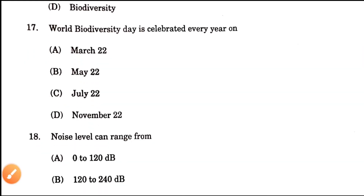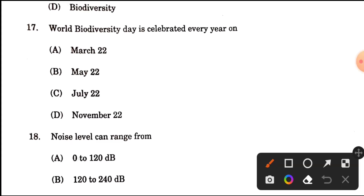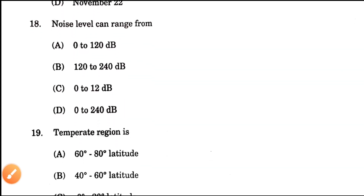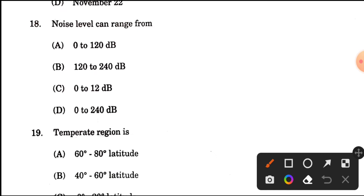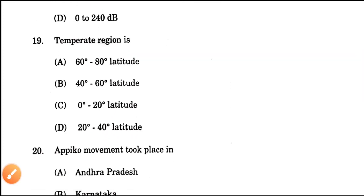Question number 17: World Biodiversity Day is celebrated every year on which date? We have discussed this in our channel. The answer is May 22nd — the 22nd of May. Question number 18: Noise level can range from what? The range is 0 to 120 decibels (dB).